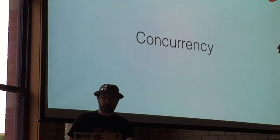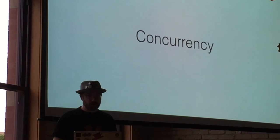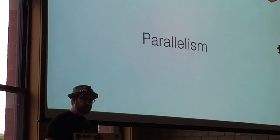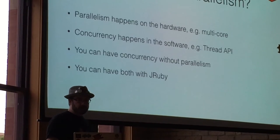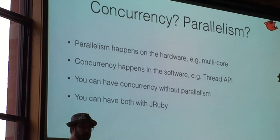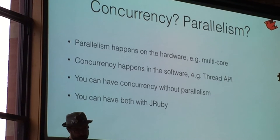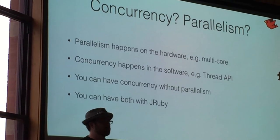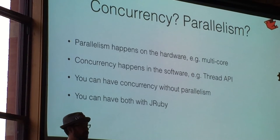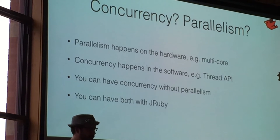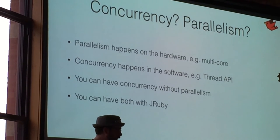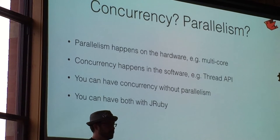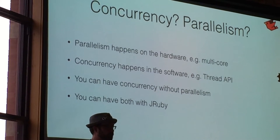Alright, so the other part of this: concurrency. Let's talk about concurrency. And really what we're talking about is parallelism. So concurrency — let's start with parallelism. Parallelism is what happens at the lowest level, on the hardware. You actually have two computing units, two CPUs or GPUs or something, physically executing code at the same time. That's parallelism.